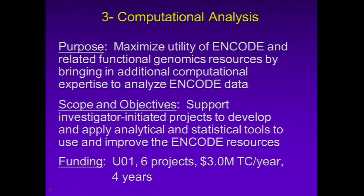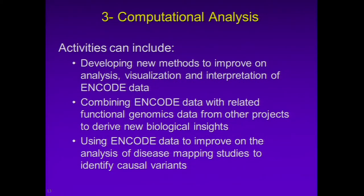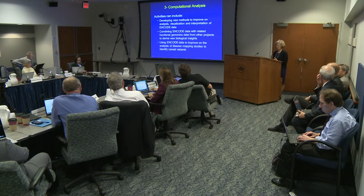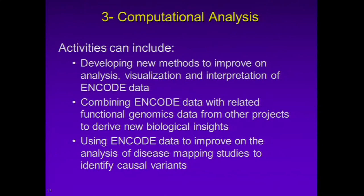The third initiative is for computational analysis, with the purpose of maximizing the utility of ENCODE and related functional genomics resources by bringing in additional computational expertise to analyze ENCODE data — another way to expand participation from the research community. We are seeking investigator-initiated projects to develop and apply analytical and statistical tools to use and improve the resources. For funding, we're looking at the cooperative agreement mechanism to fund approximately six projects at $3 million in total cost per year for four years. Activities would include developing new methods to improve analysis, visualization, and interpretation of ENCODE data; combining ENCODE data with related functional genomics data to derive new biological insights; and using ENCODE data to improve analysis of disease mapping studies to identify causal variants.